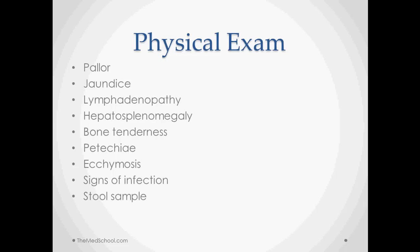On a physical exam, you look for some of the things that we saw on the chart back there, like pallor, jaundice, lymphadenopathy, which may be indicative of some kind of an autoimmune or inflammatory process as well as malignant processes.